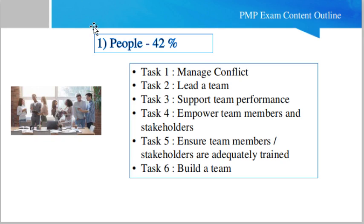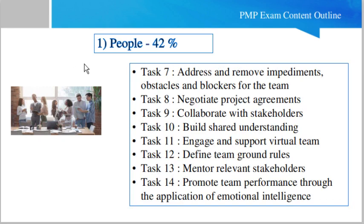Task 6: build a team — meaning team coherence, team understanding, and working as a whole unit relying on each other. Task 7: address and remove impediments, obstacles, and blockers for the team. For example, if a stakeholder is not providing information, you should address them, talk with them, and remove any problems arising for the team.